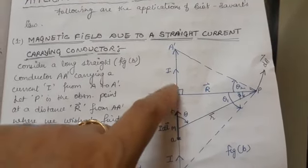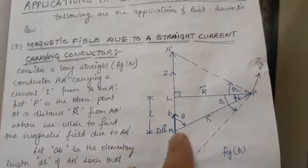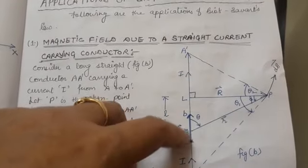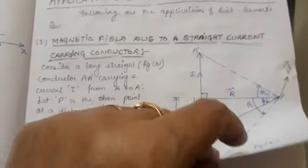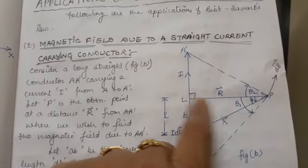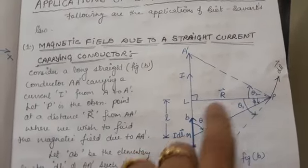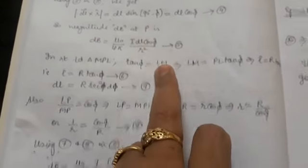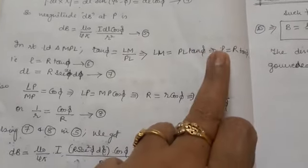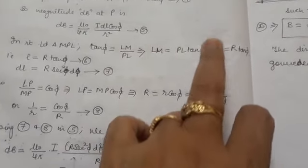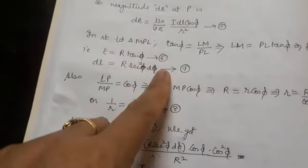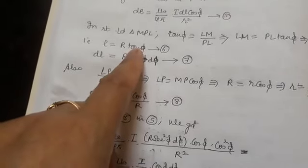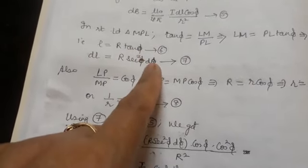From the triangle MPL, tan phi equals LM upon PL, so small l equals R tan phi. Differentiating both sides gives DL equals R secant-squared phi D phi (equation 7). Also, LP upon MP equals cos phi, so capital R equals small r times cos phi, giving small r equals capital R upon cos phi, and 1 upon r equals cos phi upon R (equation 8).